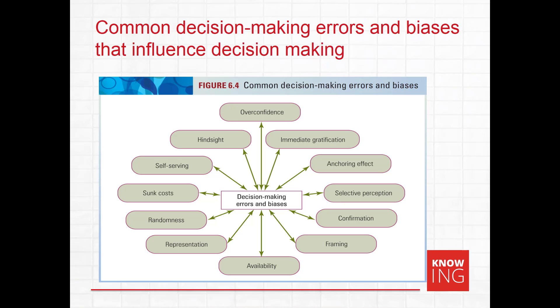The decision making process is fraught with problems and errors. As part of the human condition, people come up with shortcuts to help them make decisions more quickly and easily. These shortcuts are called heuristics, and they can create errors and biases in the decision making process.